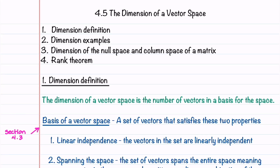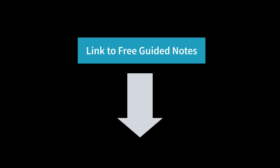Welcome to Understand the Math. This video is part of a series on linear algebra and its applications, and covers section 4.5 on the dimension of a vector space. I'll teach you what the dimension of a vector space is, introduce the rank theorem, and walk through example problems related to the dimension of the null space and column space of a matrix. Be sure to check out the link below for free guided notes.